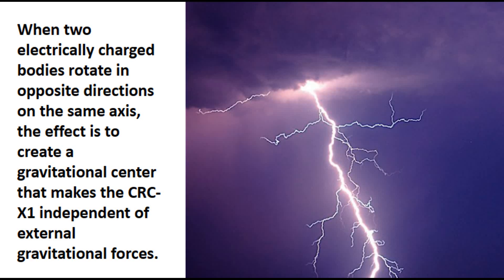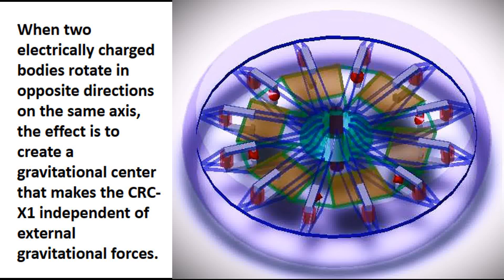When two electrically charged bodies rotate in opposite directions on the same axis, the effect is to create a gravitational center that makes the CRC-X1 independent of external gravitational forces.